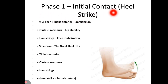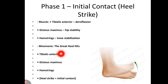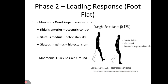Let's start with Phase 1: initial contact, also known as heel strike. Muscles acting in initial contact are tibialis anterior for dorsiflexion, gluteus maximus for hip stability, and hamstrings for knee stabilization. The mnemonic to remember is 'The Great Heel Hits': T for tibialis anterior, G of Great for gluteus maximus, H of Heel for hamstrings, and H of Hits for heel strike.